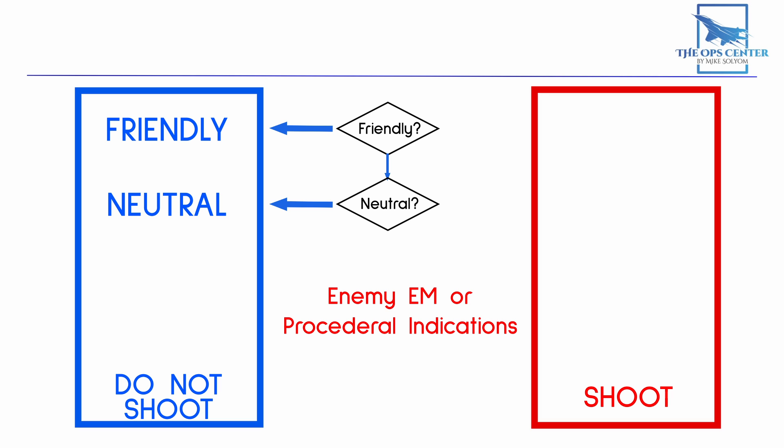Enemy electromagnetic or procedural indications, or be VID'd. You could get this from sources like the non-cooperative target recognition feature of a radar. Or passive detection of emissions, like receiving radar signals from a system that is only used by the enemy.